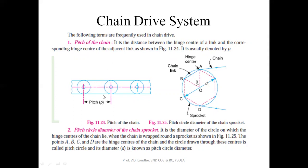Second is pitch circle diameter of the chain sprocket. It is the diameter of the circle on which the hinge centers of the chain lie. When the chain has been wrapped around the sprocket at points A, B, and C, these are the hinge points.